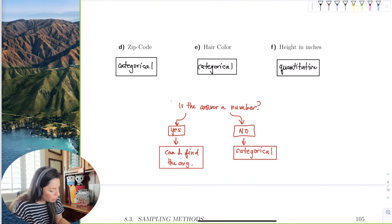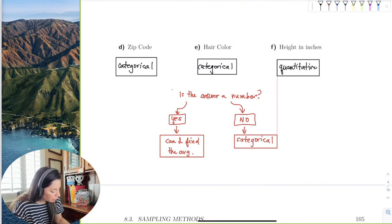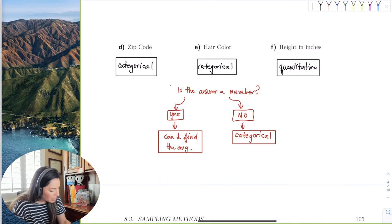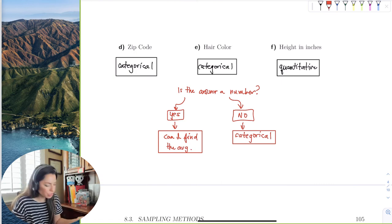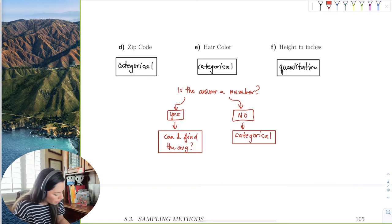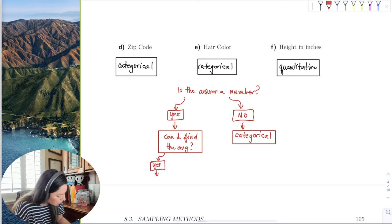And if the answer is no, then we know it's categorical. Okay, so that's the first level. Okay, so is the answer a number? If the answer is yes, then ask, can I find the average? And if this is yes, then it's quantitative.